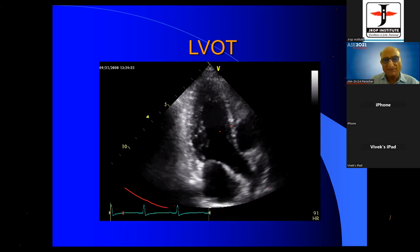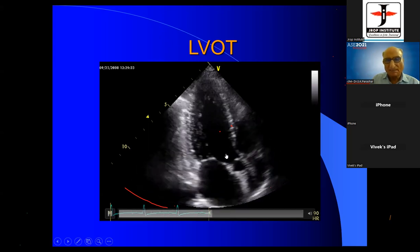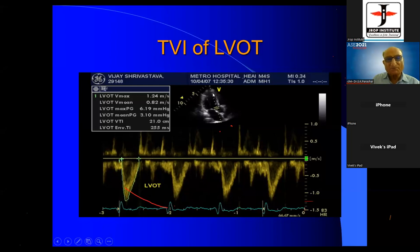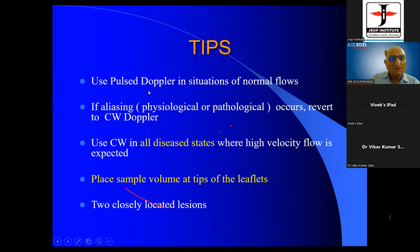So we have put a pulse Doppler and we get the LVOT velocity. This is going away from the transducer, so it is below the baseline. Remember: wherever you want to watch a particular structure — pulse Doppler. Any disease flow, high velocity — CW Doppler. Some tips: use pulse Doppler in situations of normal flows. If aliasing occurs, revert to CW Doppler. Rather than wasting time, use CW Doppler in all disease states where high flow is expected.